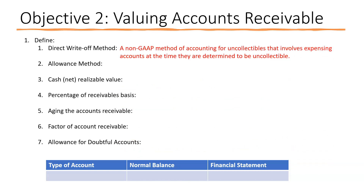The direct write-off method is a non-GAAP method of accounting for uncollectibles that involves expensing accounts at the time they are determined to be uncollectible. When you sell something on account you're taking a risk that the customer may not pay. Once you determine an account is not collectible, you take it to expense. Since it's non-GAAP, if you're following GAAP you can't use it.